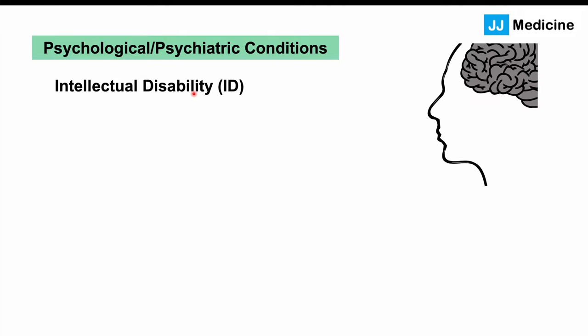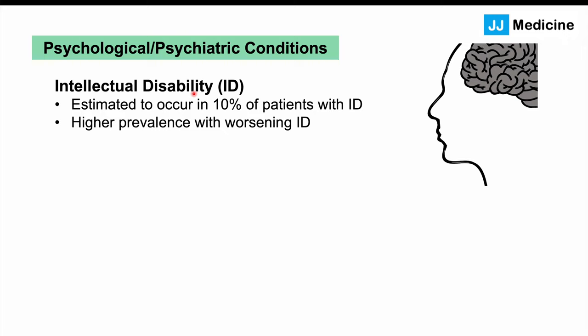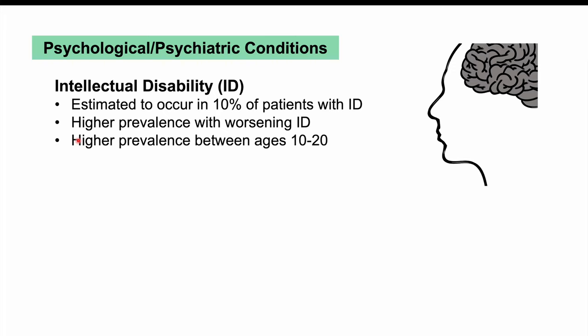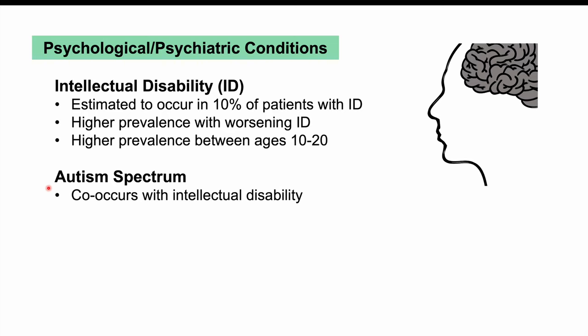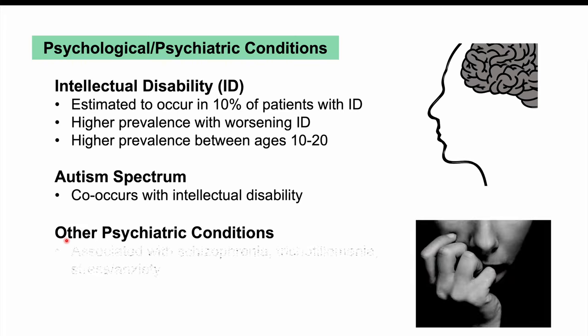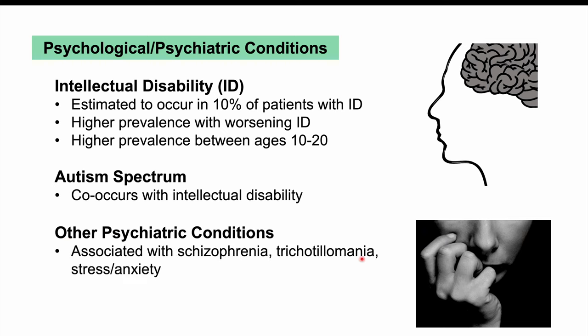Let's talk about psychological and psychiatric conditions more likely to have pica as a symptom. One is intellectual disability — about 10% of those patients will have pica symptoms, with higher prevalence as intellectual disability worsens, and higher prevalence between ages 10 to 20. Autism spectrum disorder also co-occurs with intellectual disability in many patients, especially those on the severe end of the spectrum, leading to pica symptoms. Other psychiatric conditions associated with pica include schizophrenia, trichotillomania, and stress and anxiety.